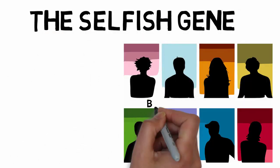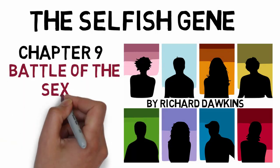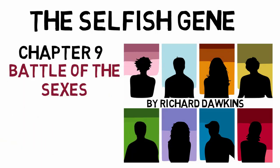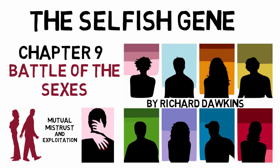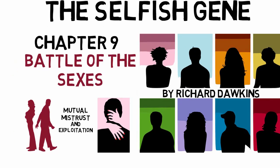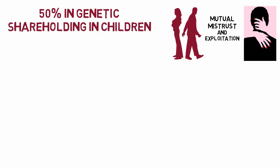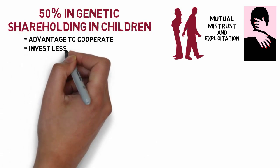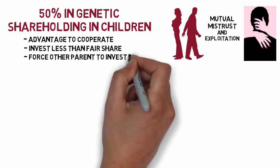The Selfish Gene by Richard Dawkins, Chapter 9: Battle of the Sexes. Dawkins discusses that sexual behavior is a relationship of mutual mistrust and mutual exploitation, as suggested by Trivers. Both the father and mother have 50% of the genetic shareholding in the same children, so there is an advantage to cooperate, but also an incentive for one parent to get away with investing less than the fair share or forcing the other parent to invest more.